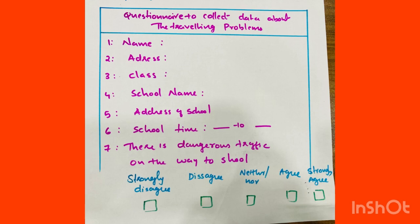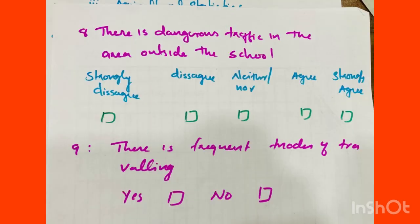The questionnaire is to collect data about travelling problems faced by school students. It includes: name, address, class, school name, school address, and school time to identify traffic-related problems. You can use a Likert scale: strongly disagree, disagree, neither nor agree, agree, strongly agree. Also include questions on mode of transportation and frequent bus usage.